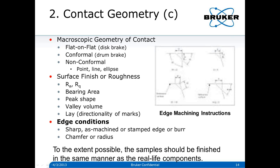Finally we get to edge conditions. These can be sharp as machined, stamped, or edged with a burr — we're really trying to avoid those. But in some cases they exist and we might want to put a chamfer or radius on. To the extent possible, samples should be finished in the same manner as the real-life components. If your engineering application uses a grit blast surface, you want to have a grit blast surface on your test sample.